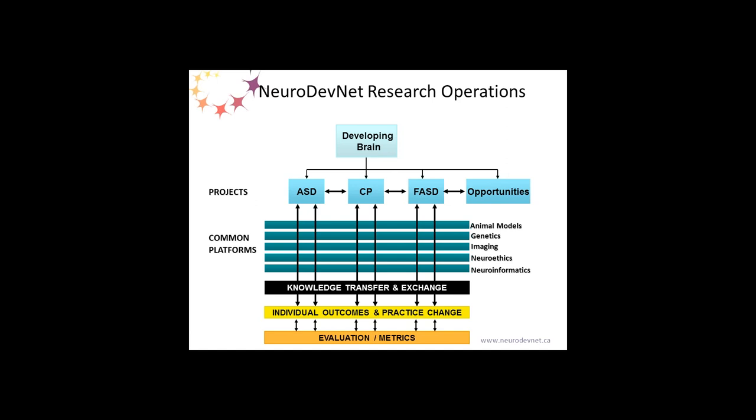Across all of these activities, the key element is not just the generation of new knowledge, but its utilization — how do we get new information into the hands of the people who need it in a form that is useful to them? Knowledge transfer and exchange are critically important activities that cut across everything we do in NeuroDevNet. The goal of the network is really to impact individual outcomes — to better the lives of children affected by these neurodevelopmental disorders by affecting change in practice. This requires comprehensive evaluation, and so metrics have been identified to determine the impact we're having.